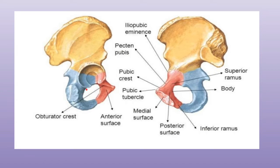The ischium has basically two main parts: the body and the ramus. The body of the ischium is a thick, massive structure that lies below and behind the acetabulum. It has basically two ends — the upper and the lower end.